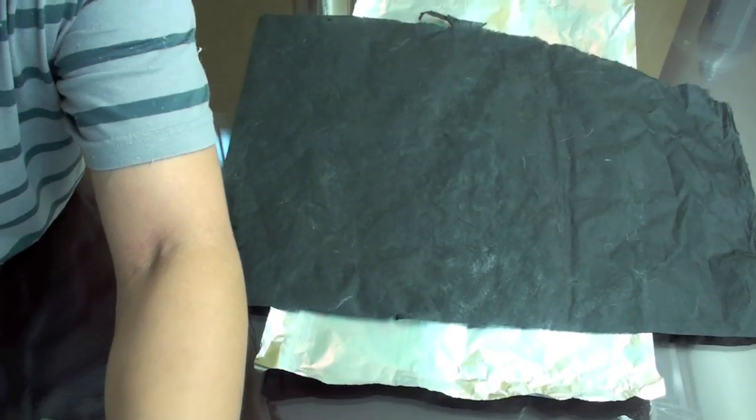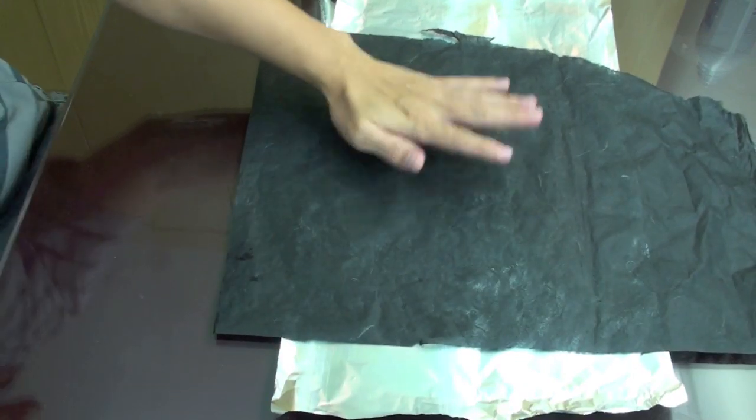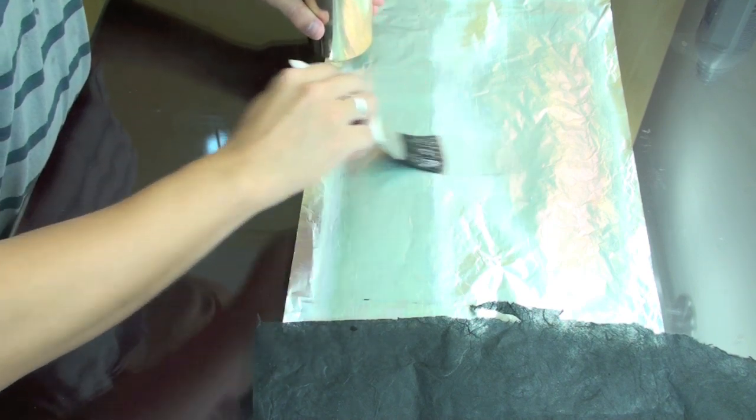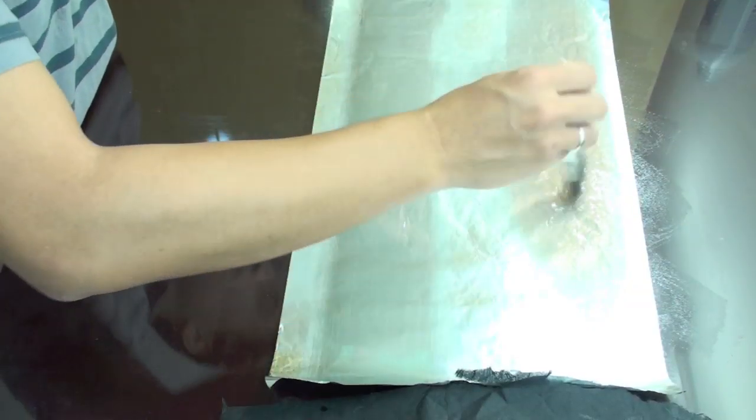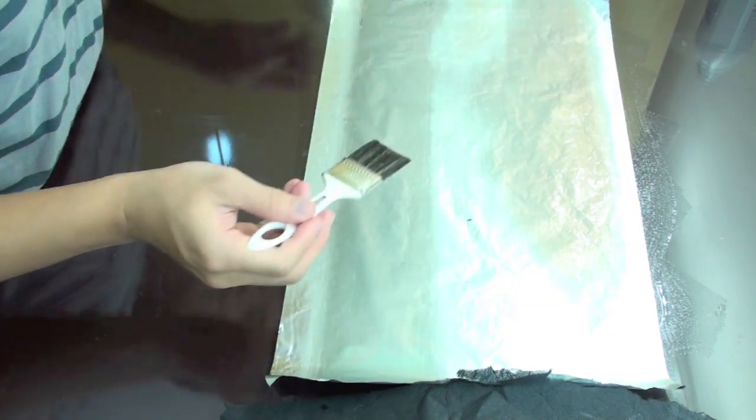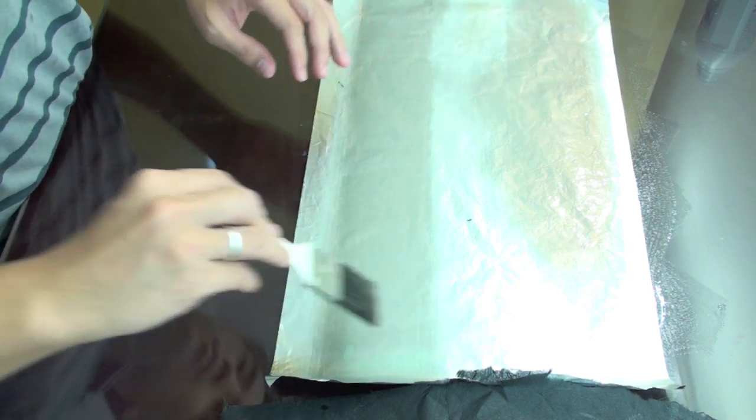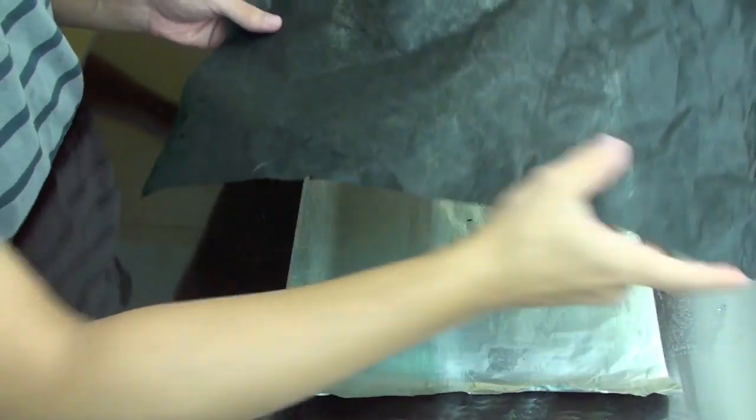And I'm just going to glue the Taimonyo paper on the aluminum foil. Basically, I just need to glue the Taimonyo paper over the aluminum foil, like this.